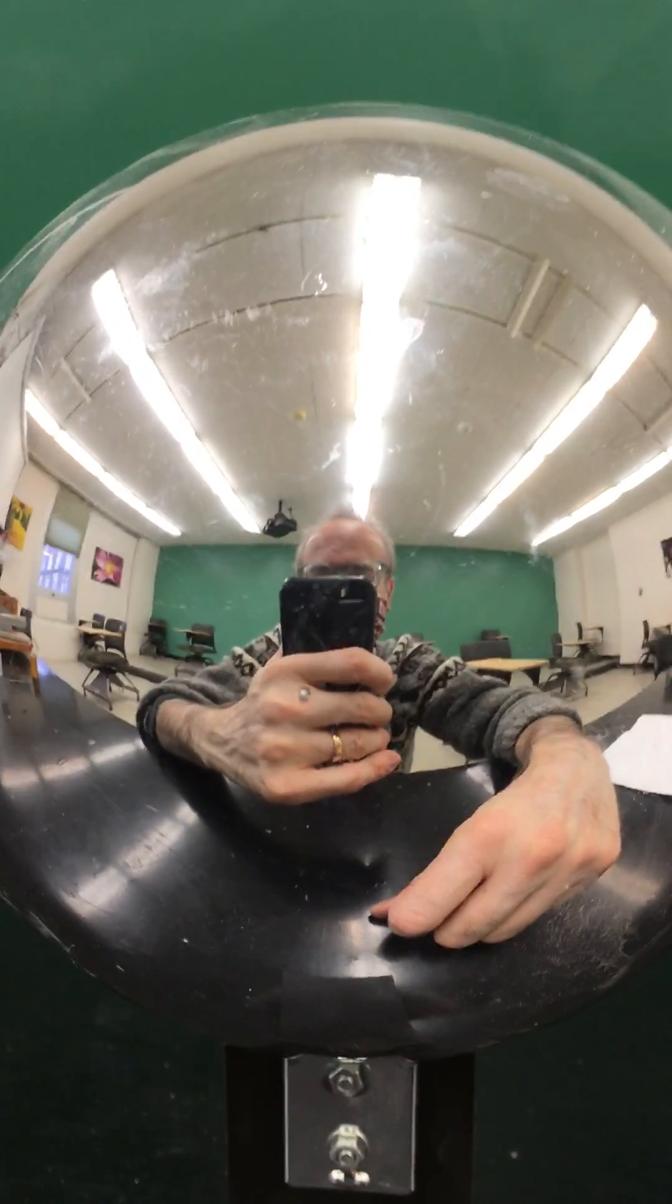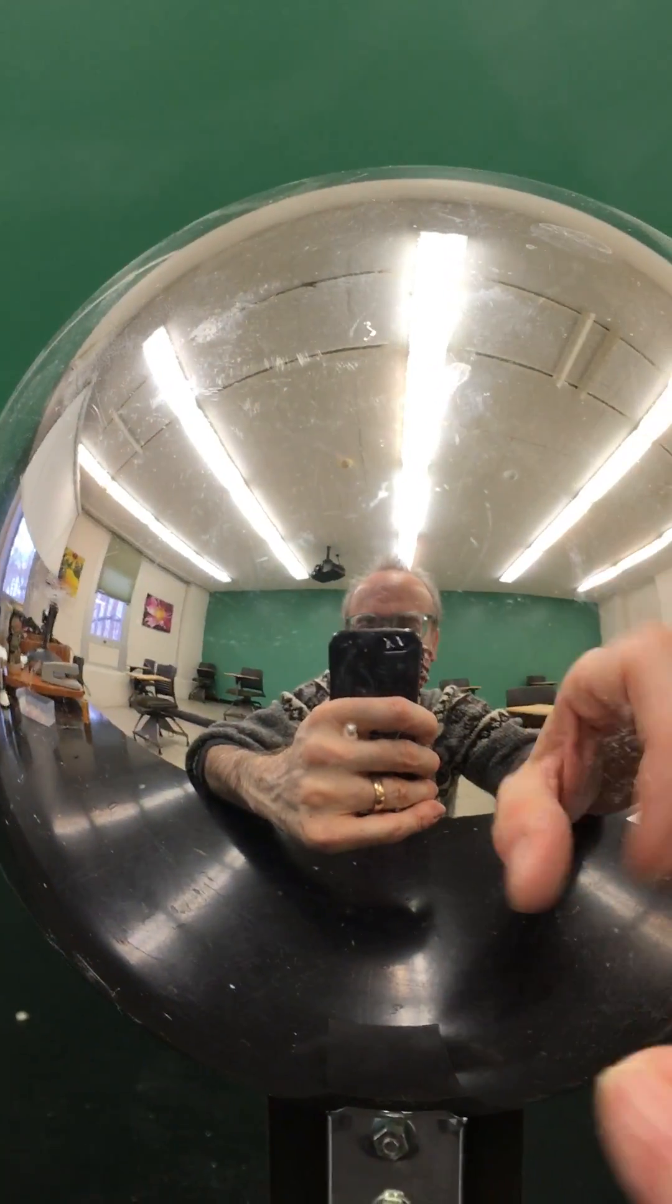So on this side, the convex side, all of the images that I see are upright. That means that they're virtual. If I take a sheet of paper like this and move it around, I cannot catch any of the images on that sheet of paper.